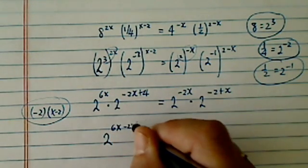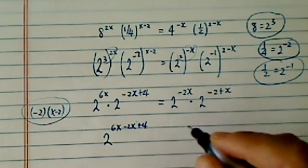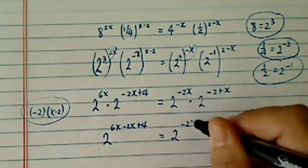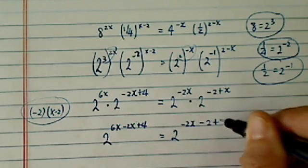So I have 6x minus 2x plus 4, adding the whole exponents. Minus 2x minus 2 plus x.